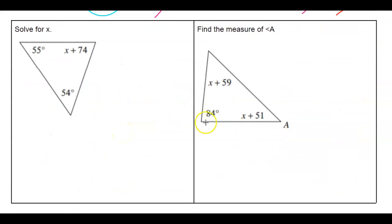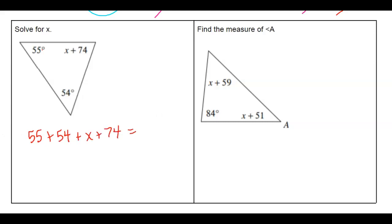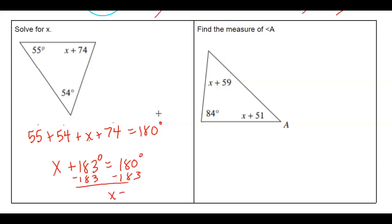Now we do the same idea using equations. All three angles have to add up to 180. Setting up the equation, I add the three numbers together and get x plus 183 equals 180. Solving for x by subtracting 183 gives x equals negative 3. Since all we wanted was x, we're done.